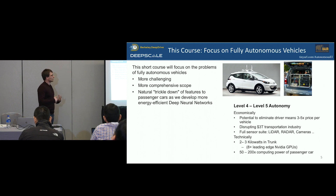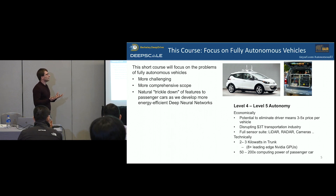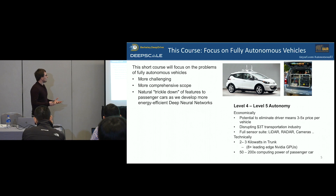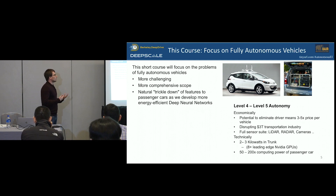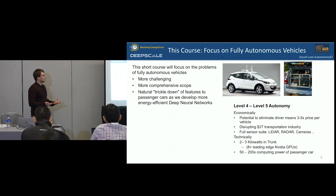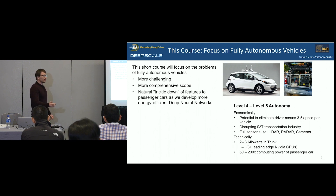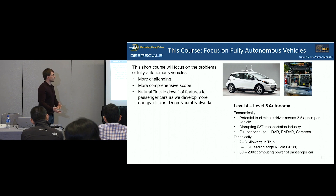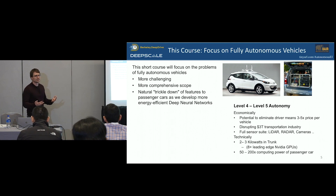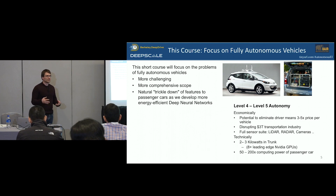In this course, I'll focus primarily on problems as they apply to level four autonomy — fully autonomous vehicles — because they're more challenging and have a more comprehensive scope. There are lots of opportunities for trickle-down of innovations driven by very expensive level four vehicles to passenger cars, as we do things like developing more energy-efficient neural nets, reducing the cost of hardware, and potentially relying more on infrastructure.